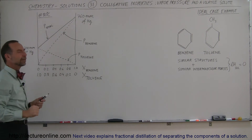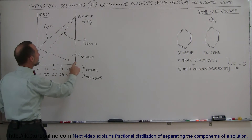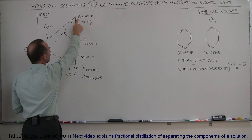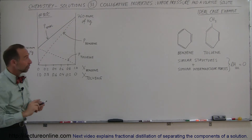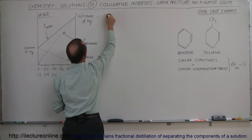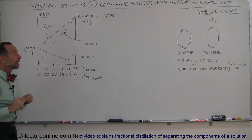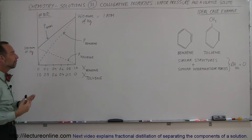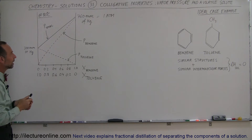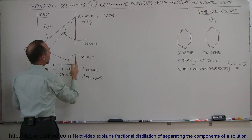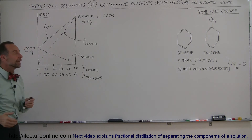This chart is at 80 degrees centigrade. At 80°C, the vapor pressure of benzene is 760 millimeters of mercury, which is 1 atmosphere. Whenever the vapor pressure of a solution equals atmospheric pressure, that is the boiling point. Sure enough, the boiling point of benzene is 80.1 degrees centigrade, so at that temperature, if the entire solution is benzene, it will begin to boil.